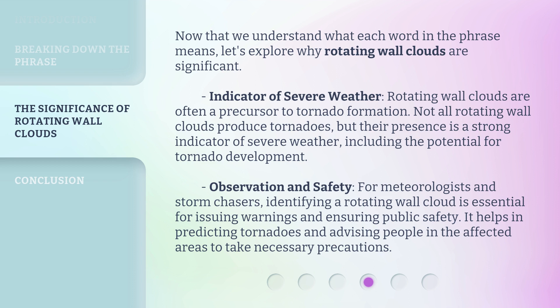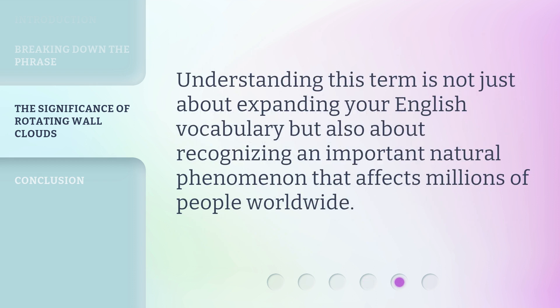For meteorologists and storm chasers, identifying a rotating wall cloud is essential for issuing warnings and ensuring public safety. It helps in predicting tornadoes and advising people in the affected areas to take necessary precautions. Understanding this term is not just about expanding your English vocabulary, but also about recognizing an important natural phenomenon that affects millions of people worldwide.